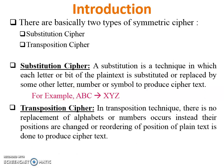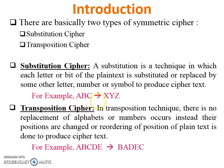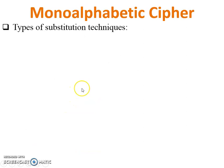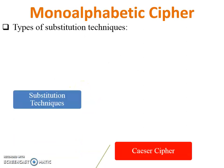In transposition cipher, there is no substitution — only the position of alphabets in the given plaintext is changed. For example, ABCDE is the plaintext, and by changing the position of ABCDE it generates the ciphertext. There are a total of six types of substitution techniques.